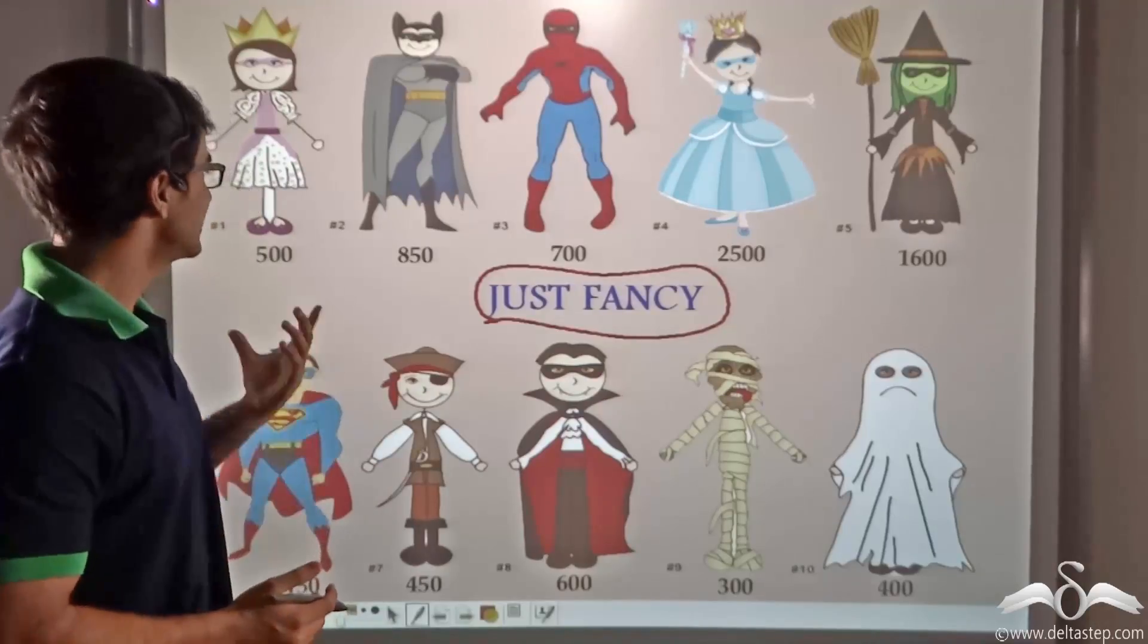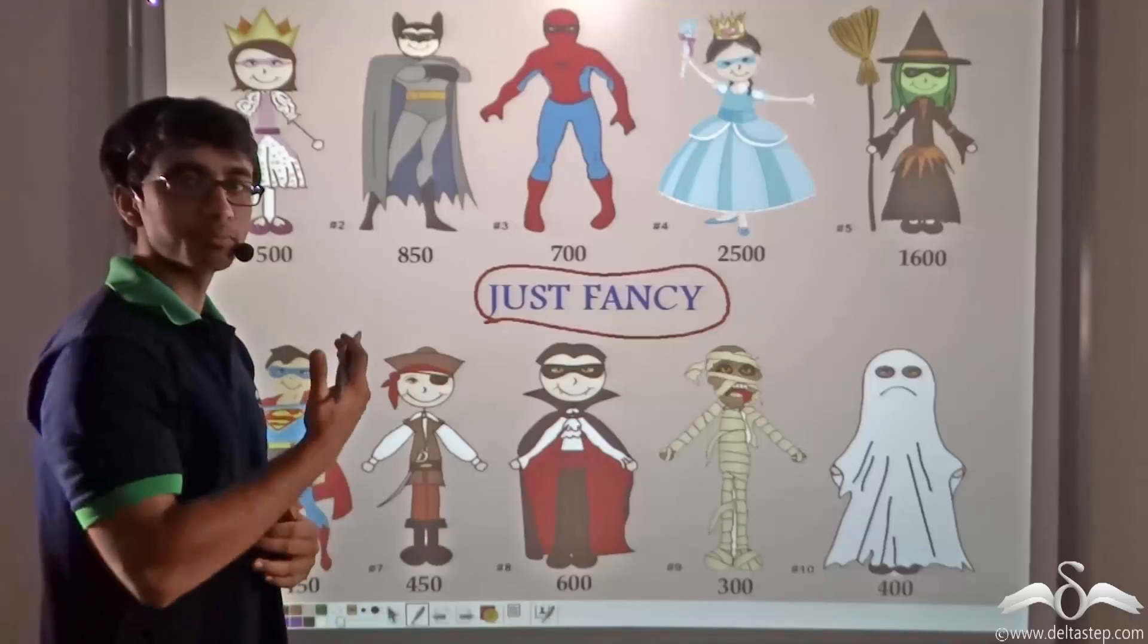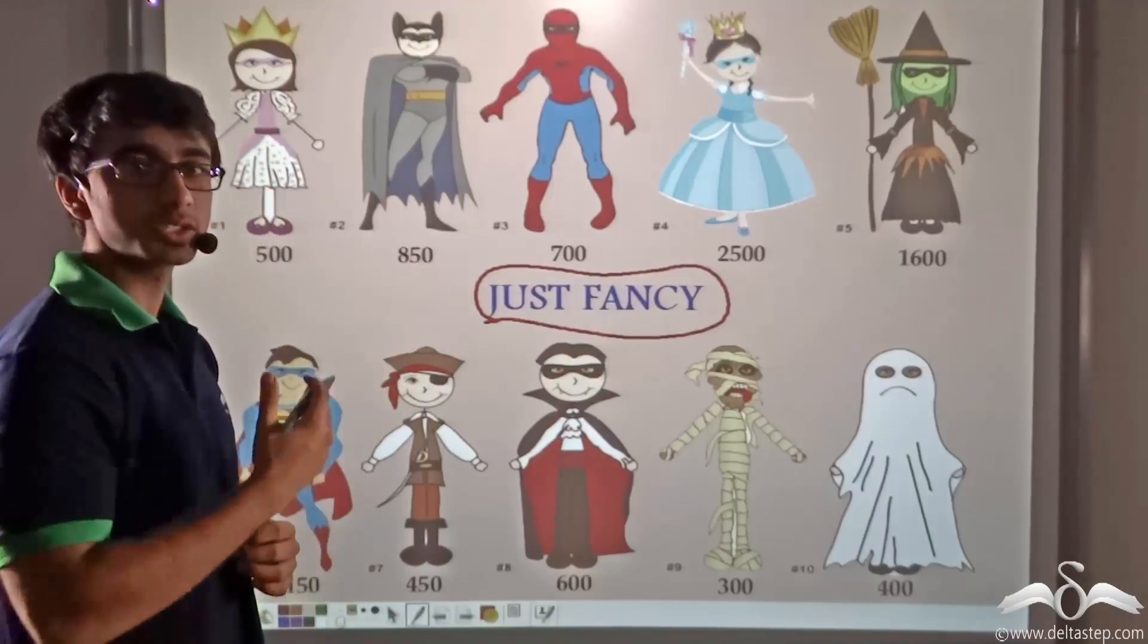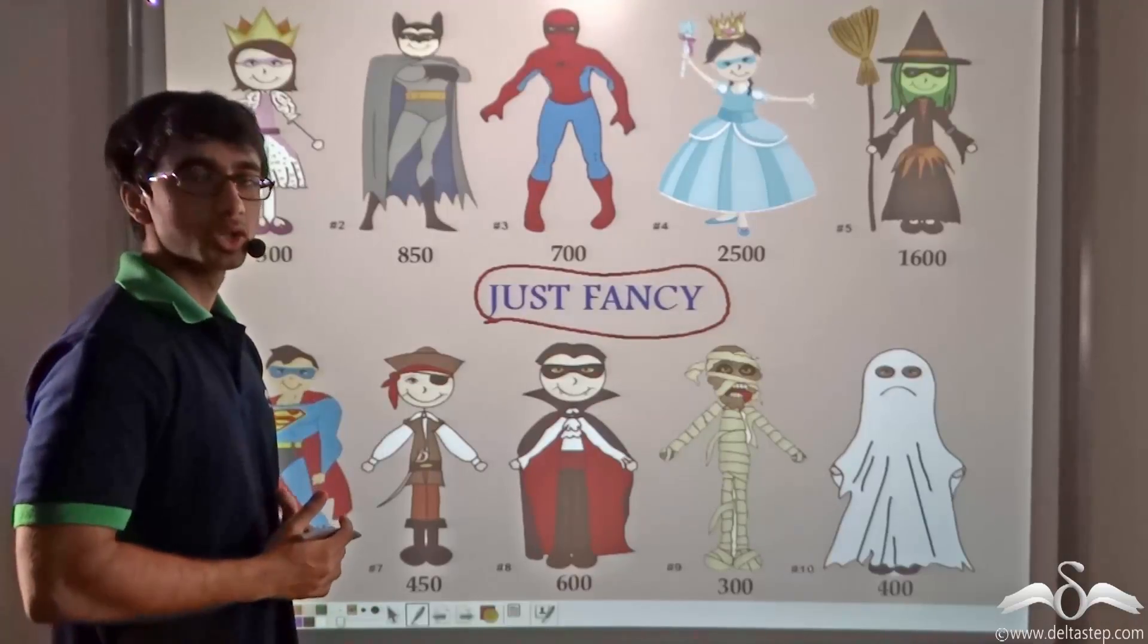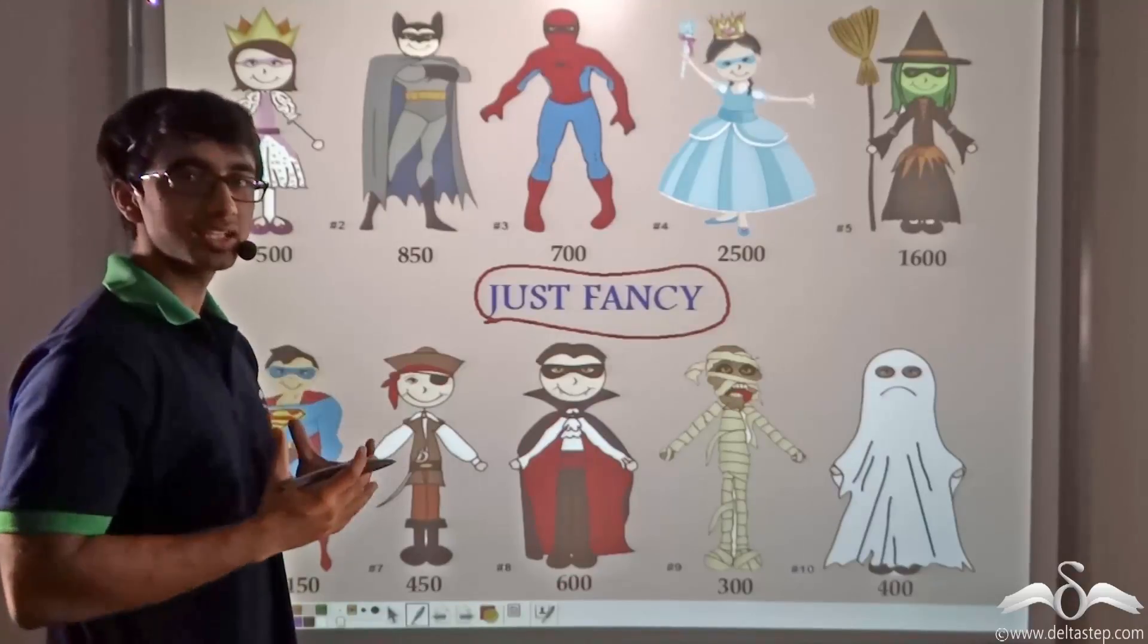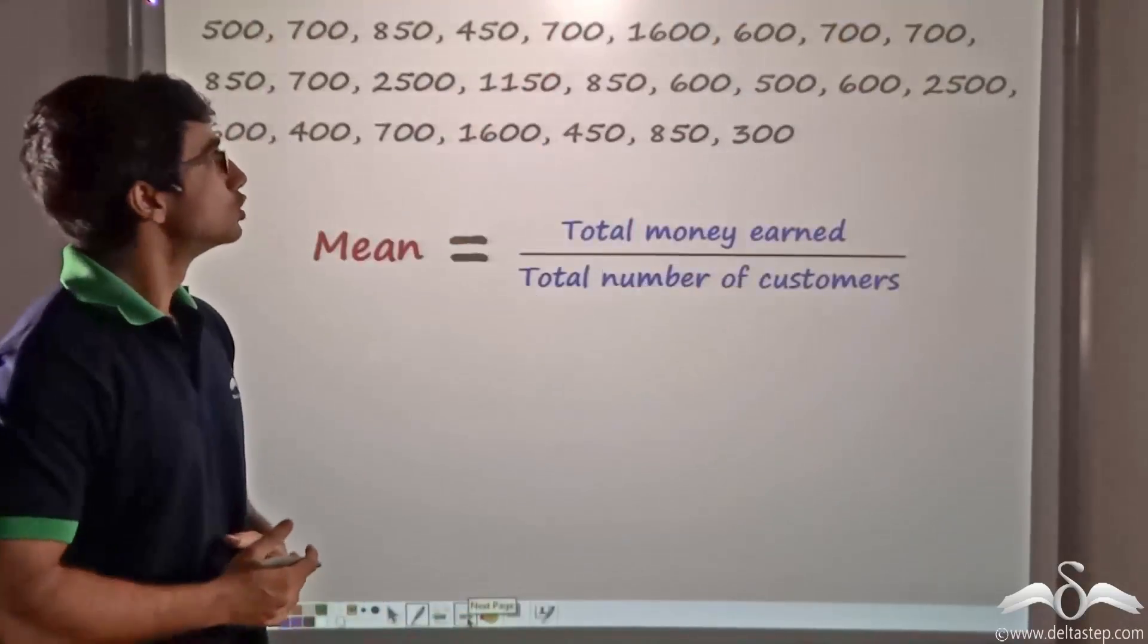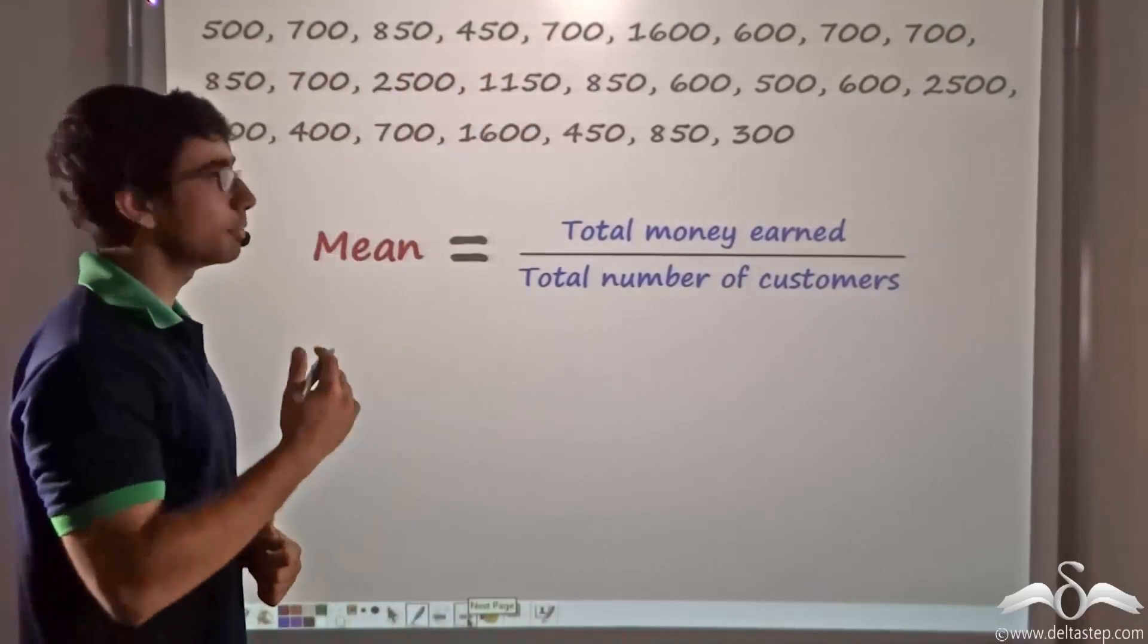So as you can see, these dresses have various prices and the parents bought these dresses for their children in different amounts or different quantities. So now the shopkeeper who had collected the money from the parents wanted to make some meaning of the money that he had collected. So he sold these many number of dresses. How many?